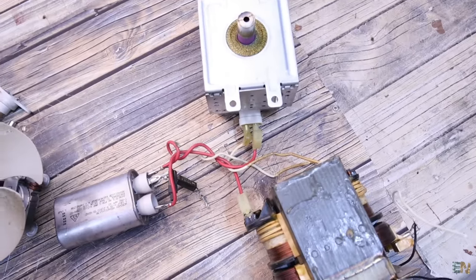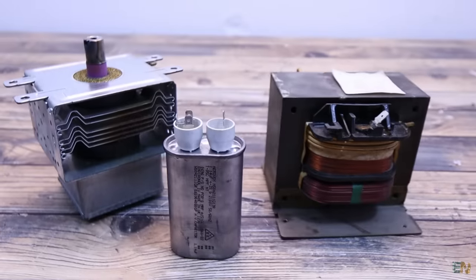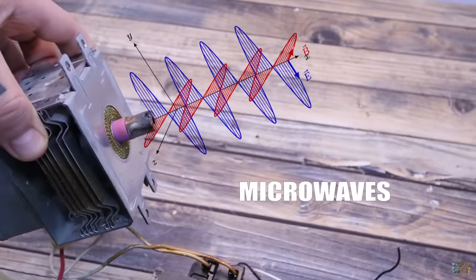But the components we are interested in are these three here. The transformer, capacitor and the magnetron. Basically, these are used to get microwaves which will heat up our food.